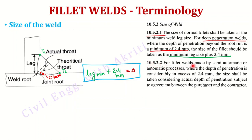Clause 10.5.2.2 states that for butt welds made by semi-automatic or automatic processes where the depth of penetration is considerably in excess of 2.4 mm, the size shall be taken considering actual depth of penetration subject to agreement between the purchaser and the contractor. So if your welds are very deep and made by automatic or semi-automatic machinery, you can also consider the actual depth — but only if the contractor and client agree. The code gives you this freedom in clause 10.5.2.2.